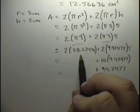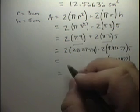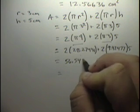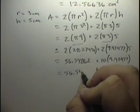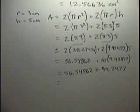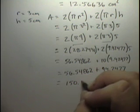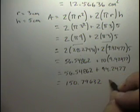And we multiply 2 times 28.27431. Our answer is 56.54862. And now we add that to the 94.2477. And we get a value of 150.979632 centimeter squared.